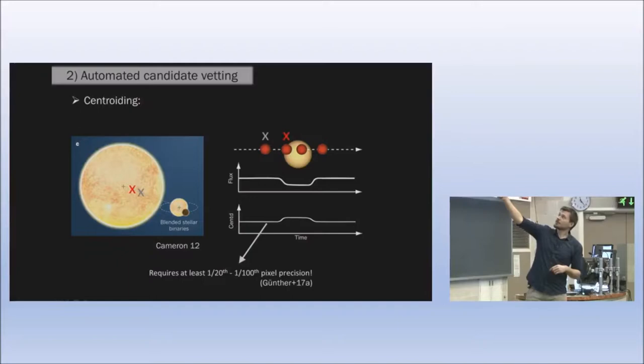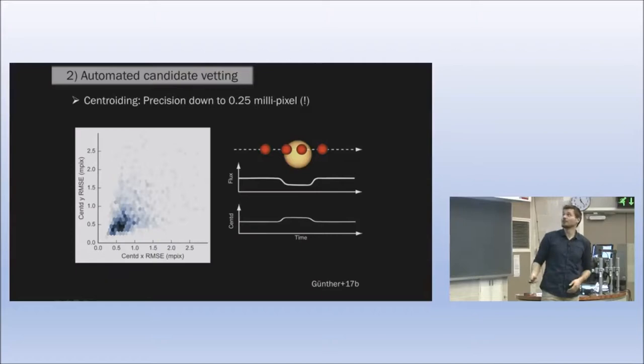As progress, we might come to this point where the transit is happening and the central flux shifts a little bit. This shift needs at least a 1 over 20 to 1 over 100 pixel precision. So we need to be really, really fine. Again, all our light falls into one pixel and we need to determine where in this pixel the light falls to a precision of 1 over 100 pixel. Luckily we do achieve this, and we actually overcome what we hoped to achieve.